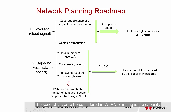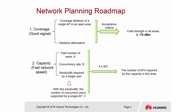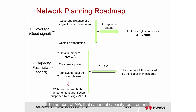The second factor to be considered in WLAN planning is capacity. The outdoor coverage area is large and user flow and mobility are high. Therefore, the outdoor coverage area does not have specific capacity requirements. However, in areas such as densely populated squares and concerts, network capacity is required. The number of APs that can meet capacity requirements is calculated based on the total number of users, concurrency rate, and bandwidth required by a single user.